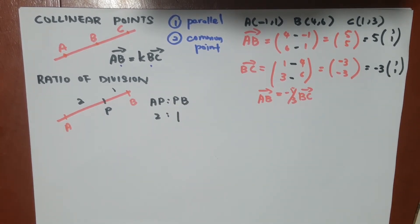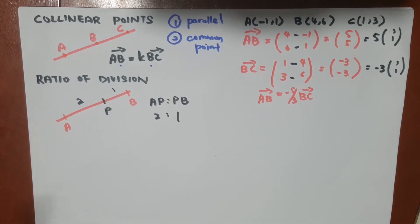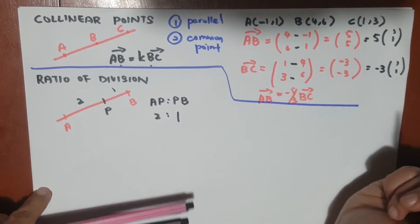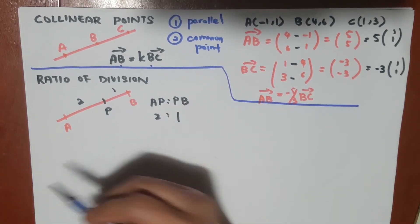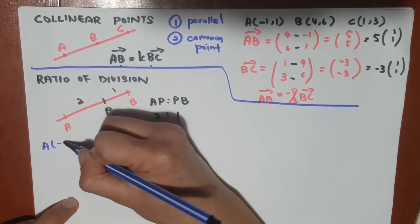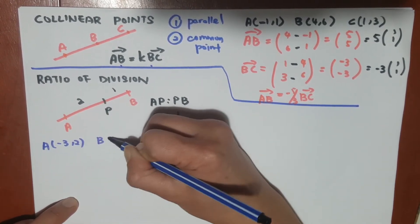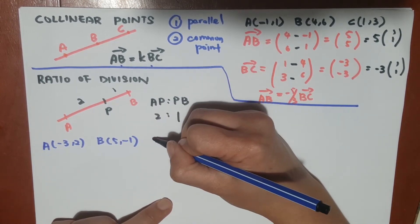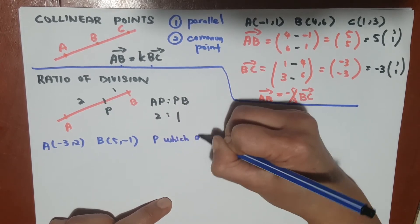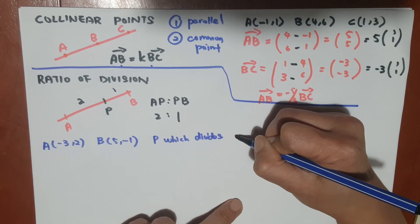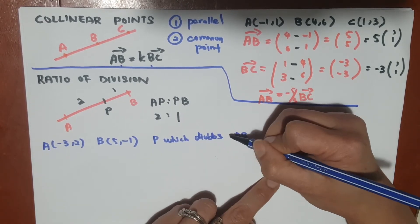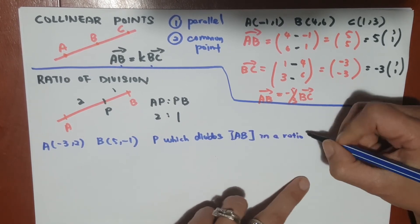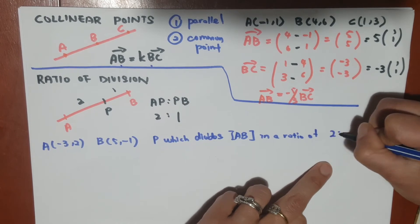If the distance between A to P is double the distance of P to B, we can write this ratio as 2:1. Now, if we have a question, for example, A is (-3, 2), B is (5, -1), so we need to find point P which divides AB in a ratio of 2:5.